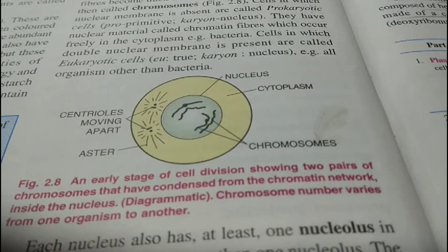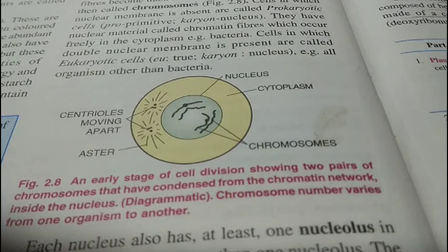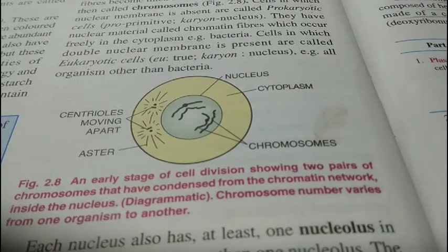The chromosome number is not responsible for the size of the body. The chromosomes are actually responsible for different kinds of features or genetic characters which an organism bears. Body size is not a factor determined by chromosomes.